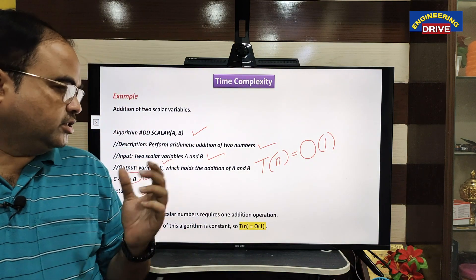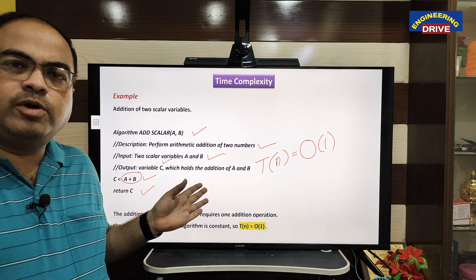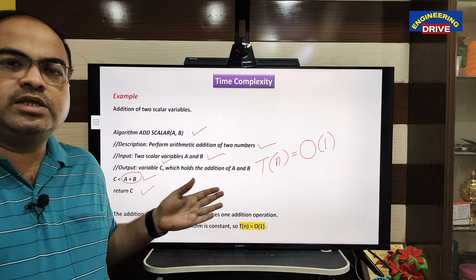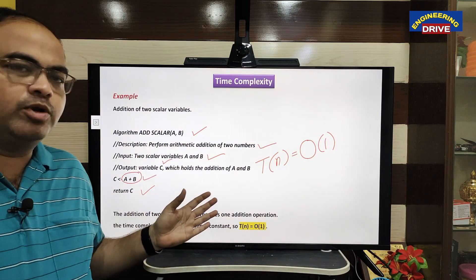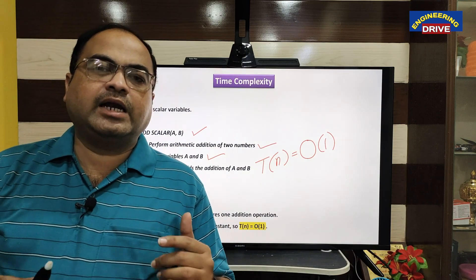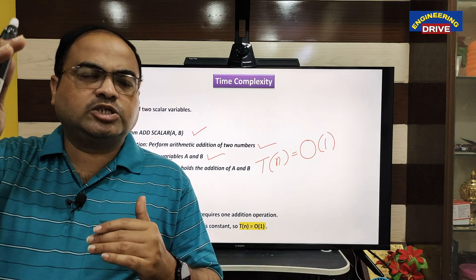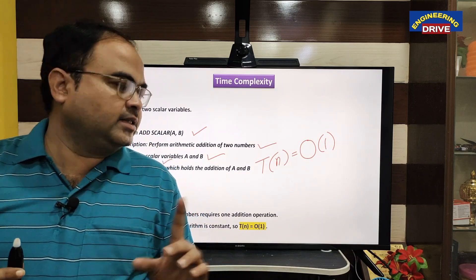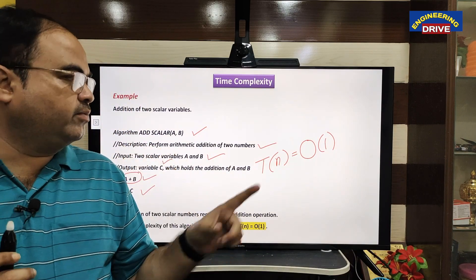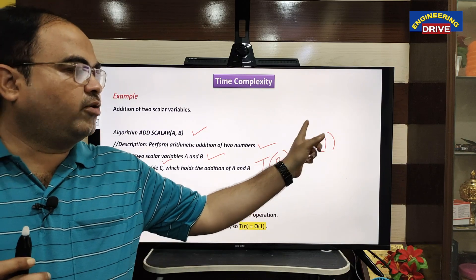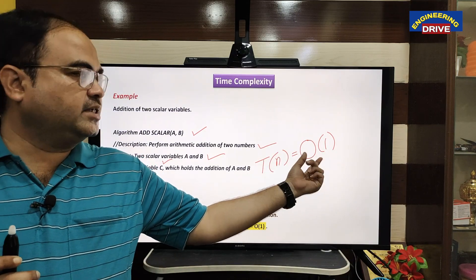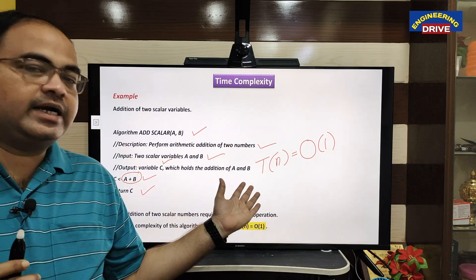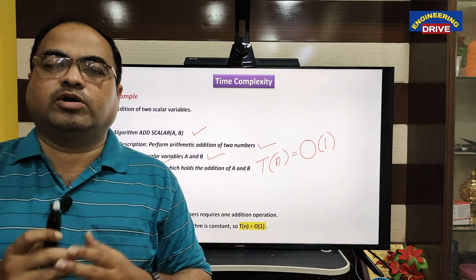Is any type of loop available in this algorithm? No. Is there any type of repetition we are doing in this algorithm? No. It is just a simple algorithm. Whenever you write an algorithm which consists of steps that are executed only once, the time complexity of that algorithm will be Big O of 1, where 1 represents a constant. This is how you calculate the time complexity of an algorithm.